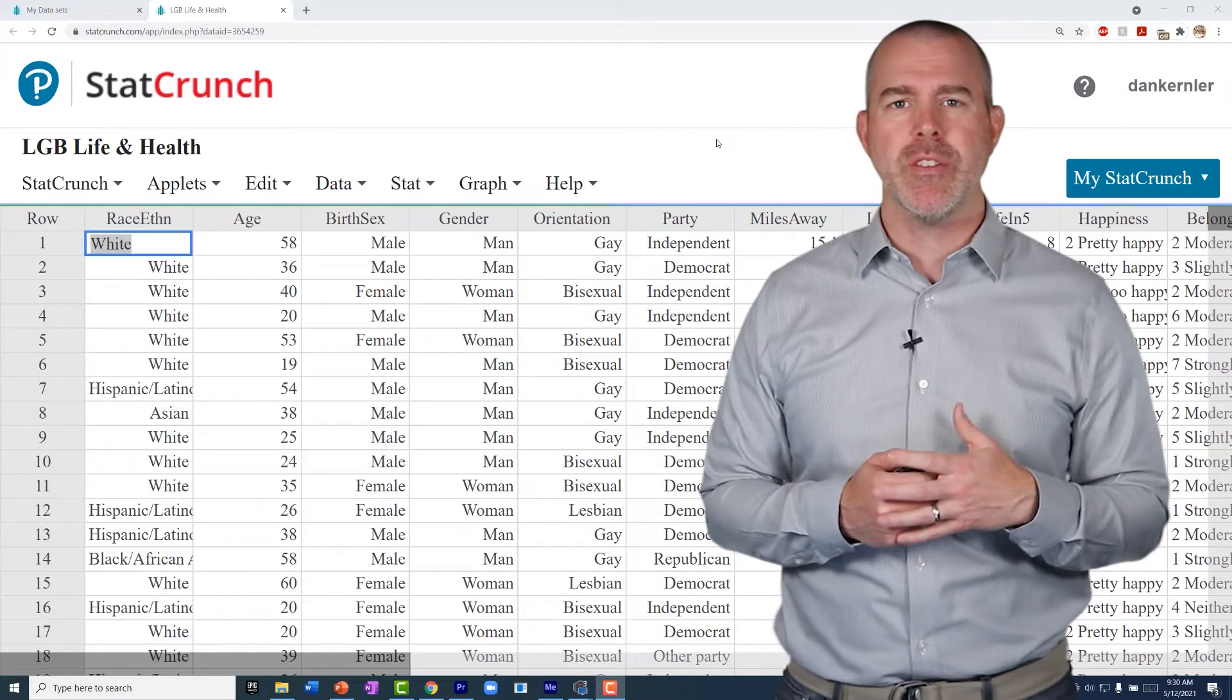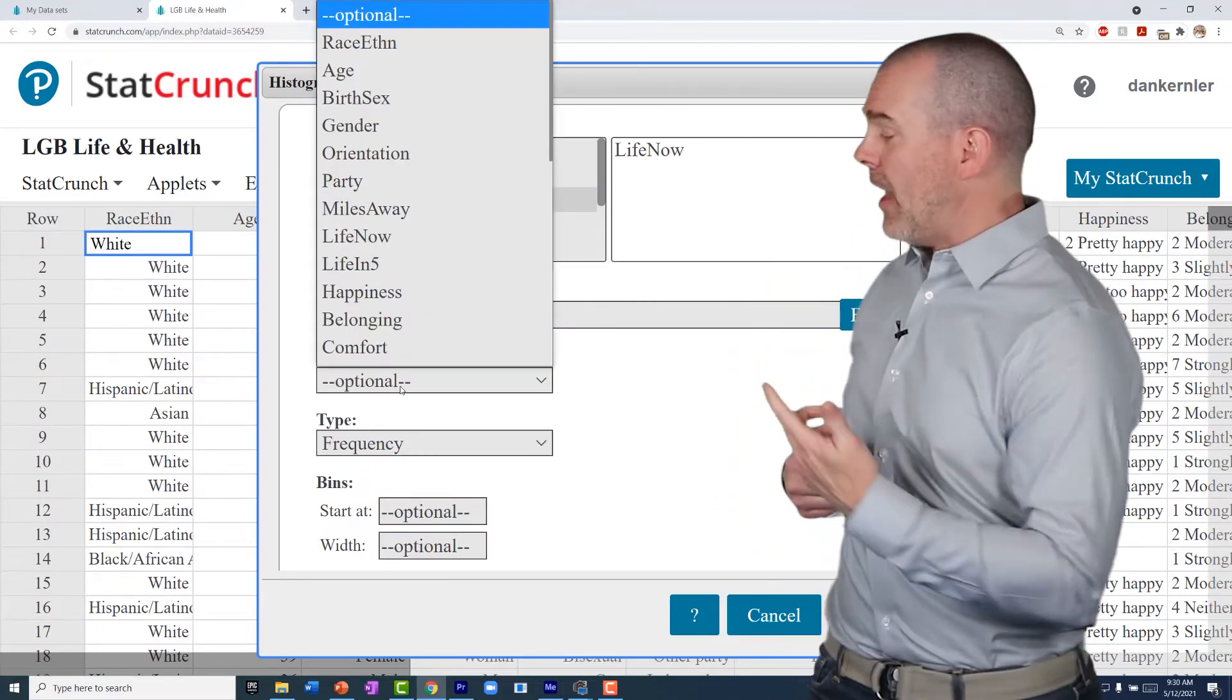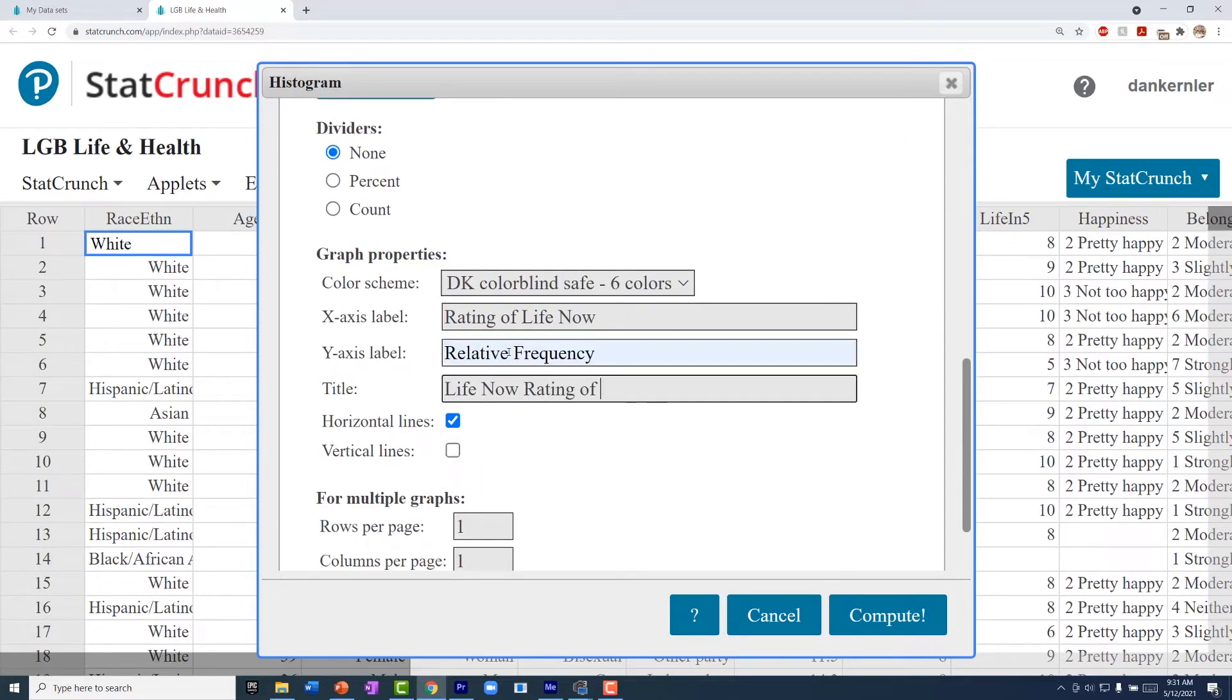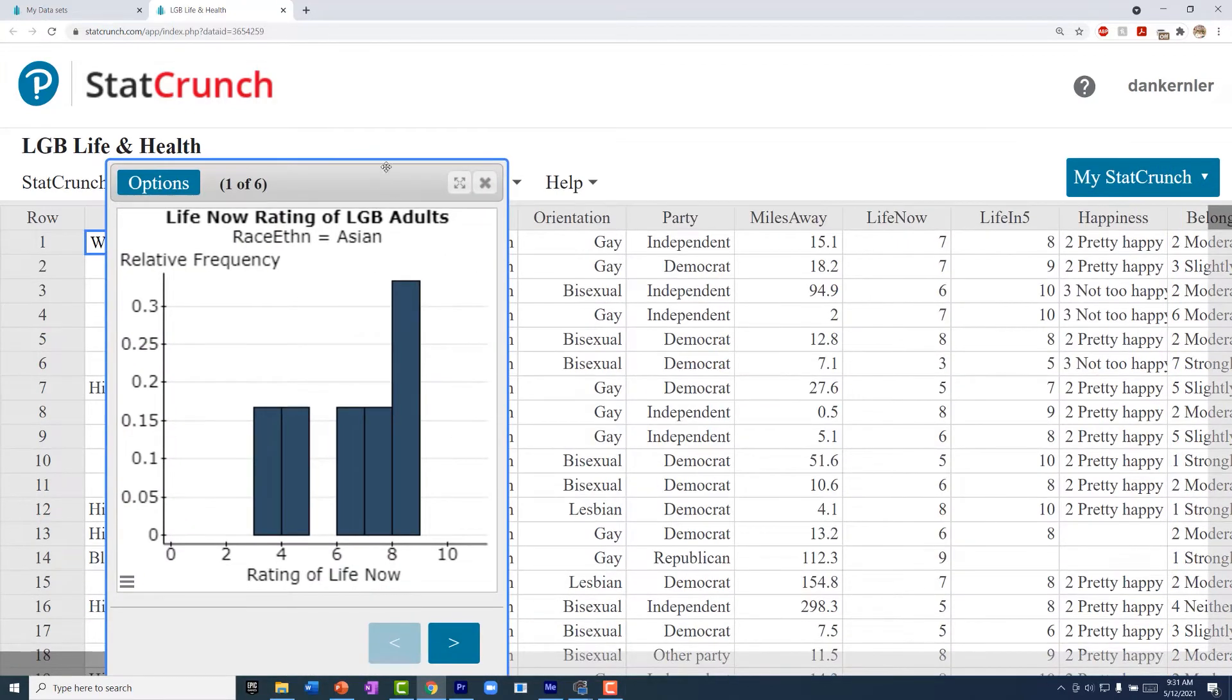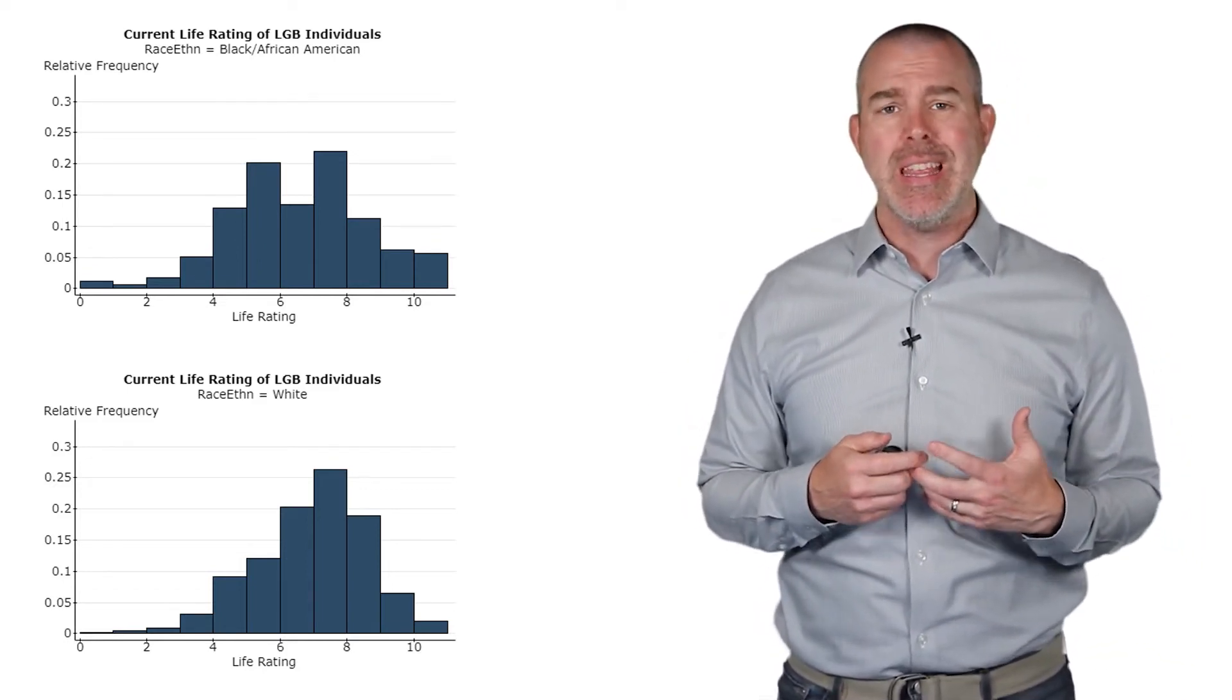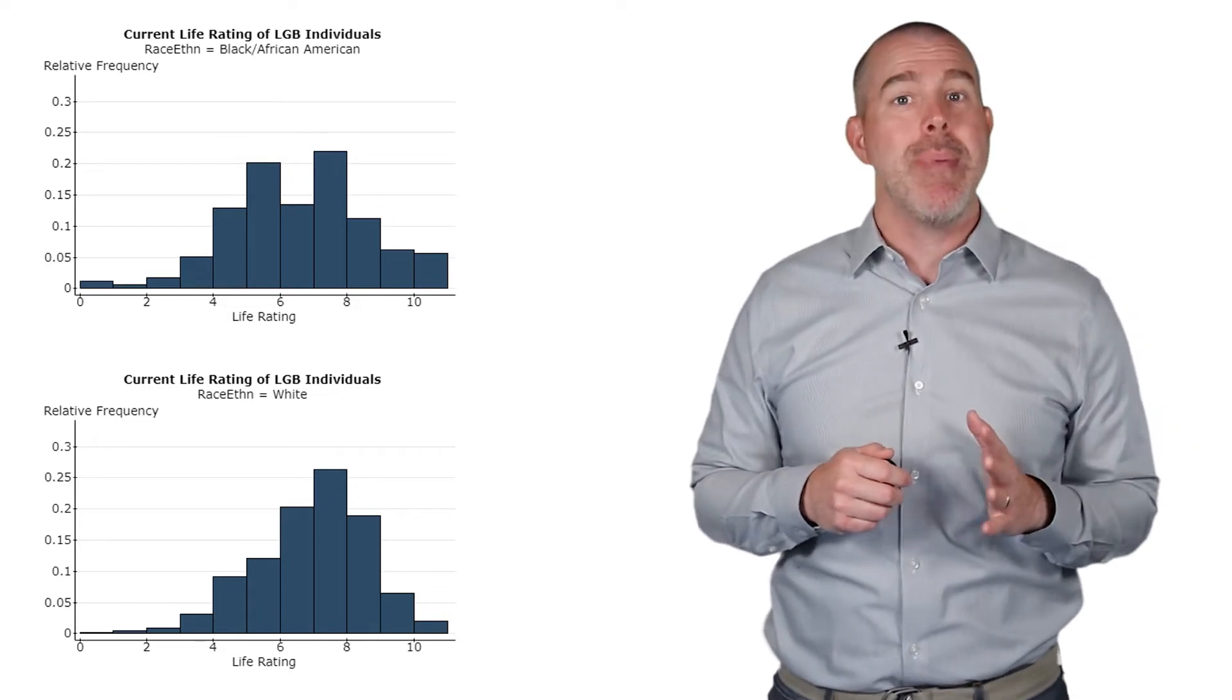Let's dive in and talk about some specific variables here and how we might understand this from looking at those variables. So let's look in our lesbian, gay, bisexual database. I'll put the link in the description. And one of the variables in there is life now. So we'll do a histogram. I've got a screen capture of me doing the histogram. And I think I'd like to do that and group it by race or ethnicity. Okay, I've got a couple up here, the one for black, African-American, and the one for white. And we can see that they definitely look different. Not only is there a different peak for the two, but there's also a different spread. The white look a little more condensed.